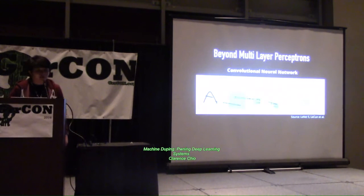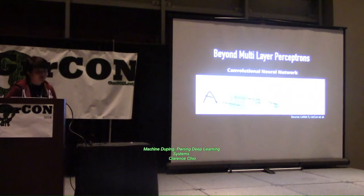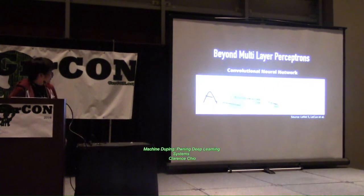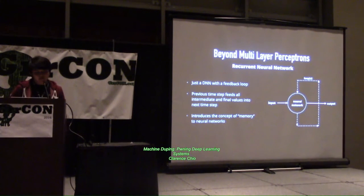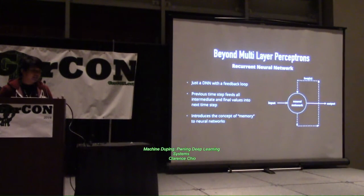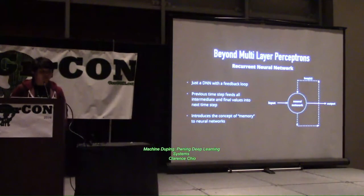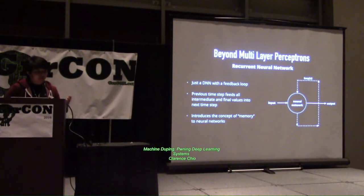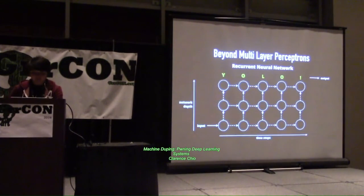This is exactly how digit recognition or character recognition works — one of the most famous early neural networks that had good results for digit recognition. A different kind of neural network is recurrent neural networks — a deep neural net with a feedback loop, where previous inputs also come into play. Previous time steps feed into intermediate steps and final values of the next time step, introducing the concept of memory into neural networks, allowing you to predict what comes next based on patterns in the past.